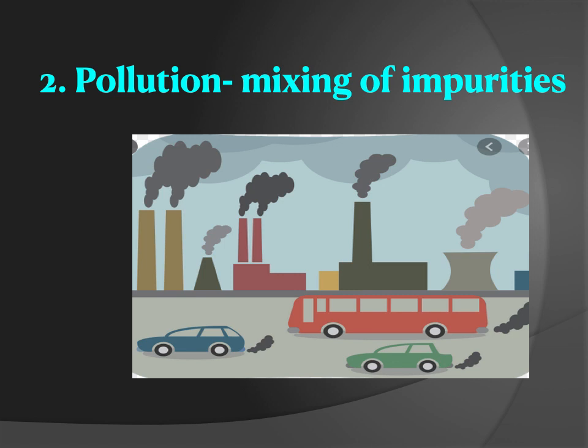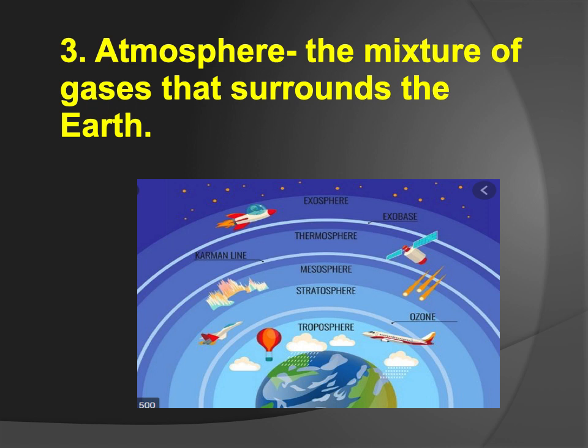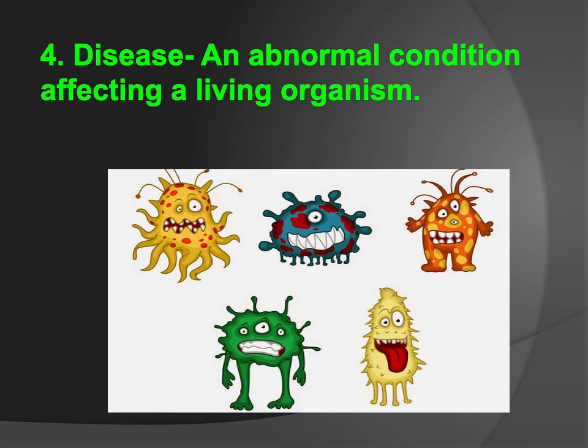Pollution: mixing of impurities, whether in air or in water, is called pollution. Atmosphere: the mixture of gases that surrounds the earth is called atmosphere. Disease: an abnormal condition affecting a living organism. For example, by air pollution we get different diseases like asthma, lung problems, and skin allergies.